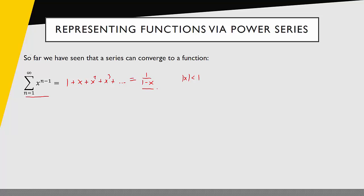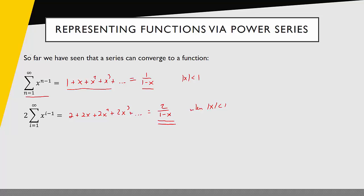Because we have an equation, we can manipulate both sides. There is no reason we couldn't multiply both sides by 2. So if we look at this next example, we have 2 times that series. If our original series was just the sum of these terms and I multiply by 2, I can distribute across the sum, and get 2 plus 2x, plus 2x squared, plus 2x cubed, and so on. This is also geometric, but with a different 'a' value, so the result is 2 over 1 minus x. This is still true when the absolute value of x is less than 1.